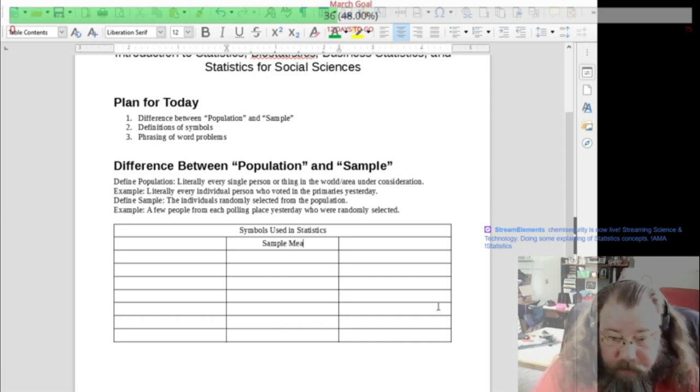So sample mean, or not sample... so variable. And on the left, I'm going to have what symbol is used for the population. And on the right, I'm going to have the symbol for the sample. And so, standard deviation, variance, size, proportion.